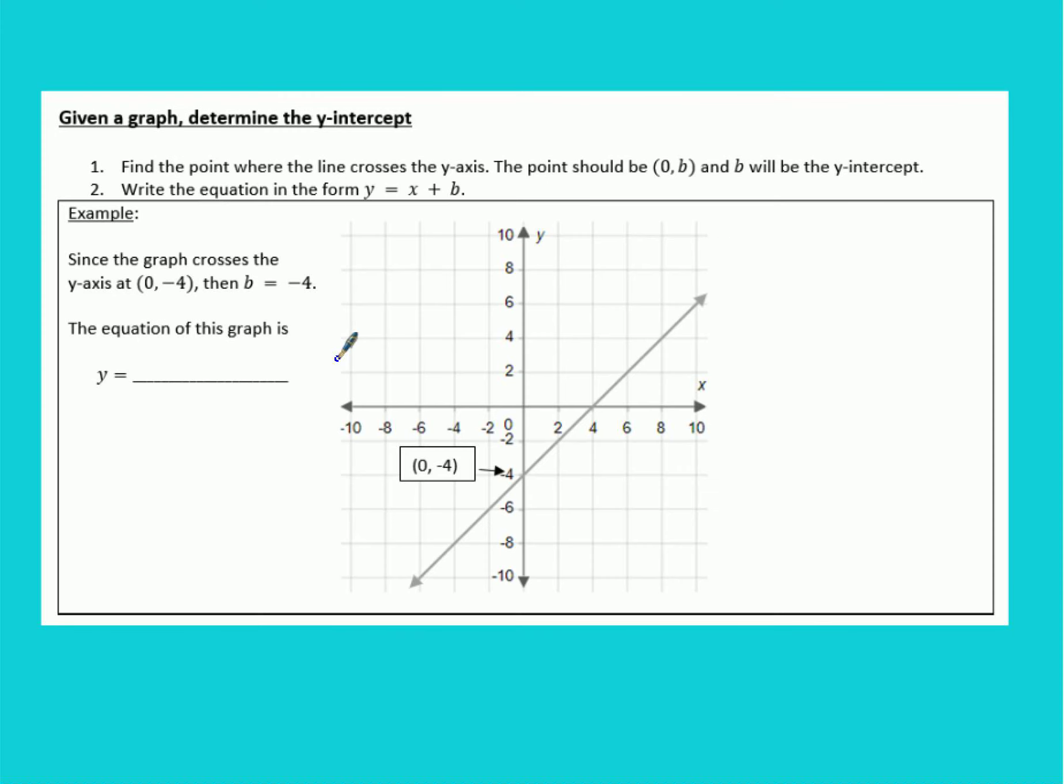Now moving into the next example, it says given a graph determine the y-intercept. So if you are asked to find what the y-intercept is when you look at a graph, you want to find the point where the line crosses the y-axis. So you look at the y-axis and you find the point where the line is touching it. So for us that is right here and that point is 0, negative 4.